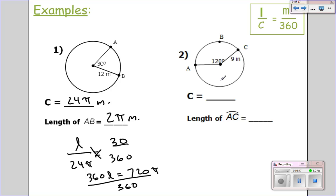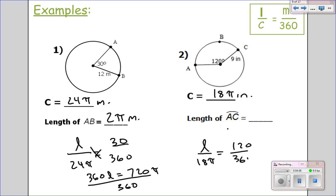Pause and see if you can do this one. We're looking for arc AC. First find the circumference — radius is 9, so 18 pi inches. Arc length over 18 pi equals the angle of 120 over 360. Cross multiply: 360 times the arc length equals 18 pi times 120, which is 2160 pi. Divide both sides by 360, and I get 6 pi inches. The length of arc AC is 6 pi inches.